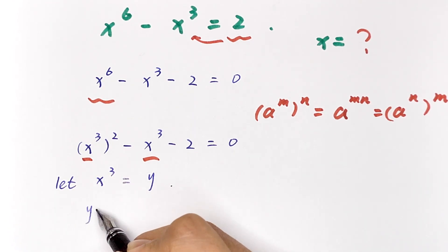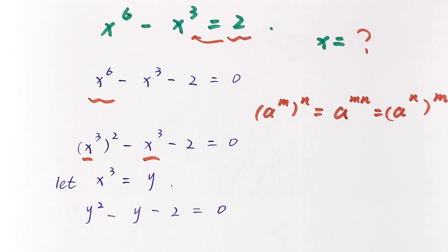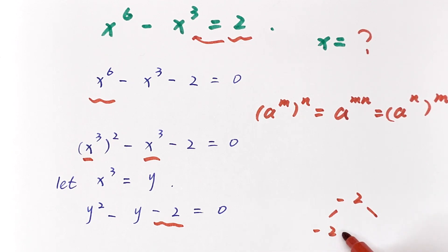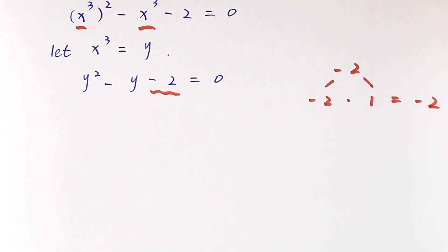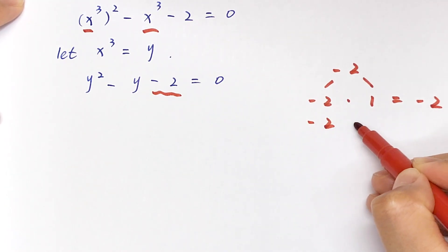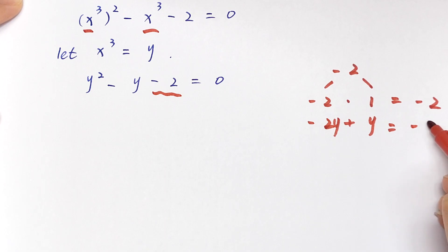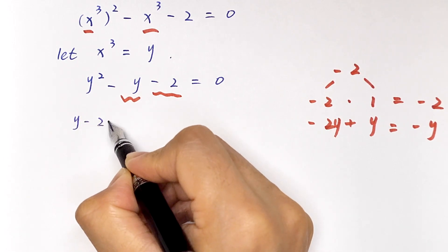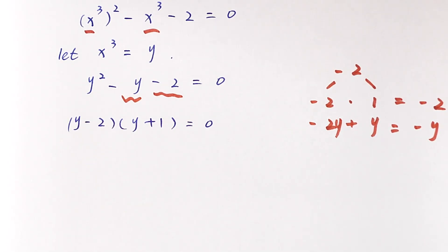Substituting, we get y squared minus y minus 2 equals 0. To factorize this quadratic equation, we look for two numbers that multiply to negative 2 and add to negative 1. Those are negative 2 and positive 1, giving us y minus 2, bracket, times y plus 1, bracket, equals 0.